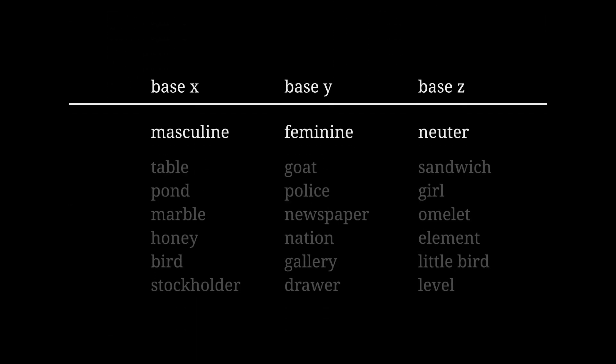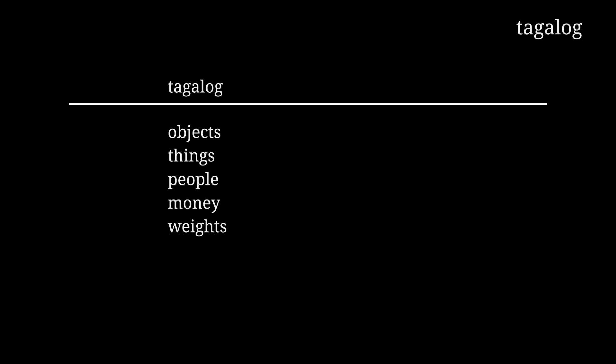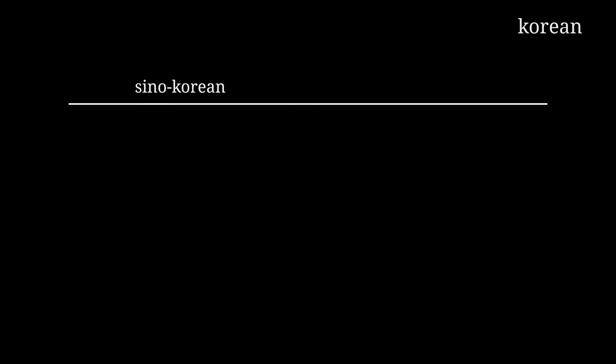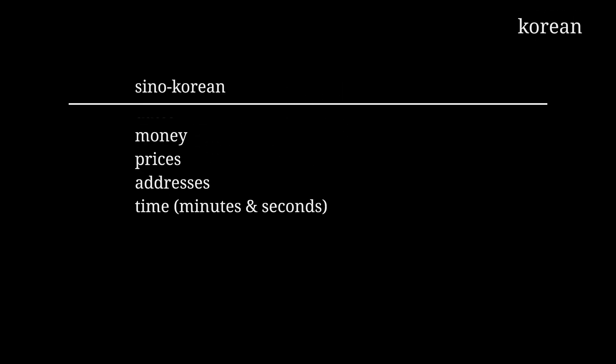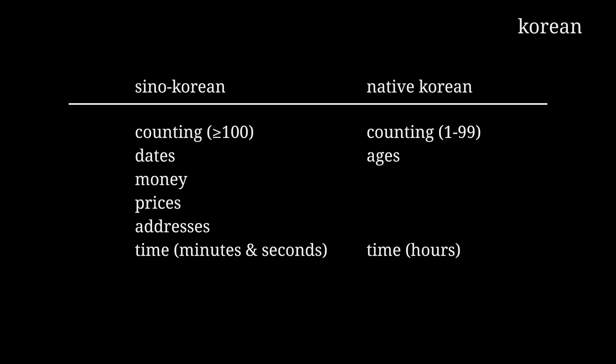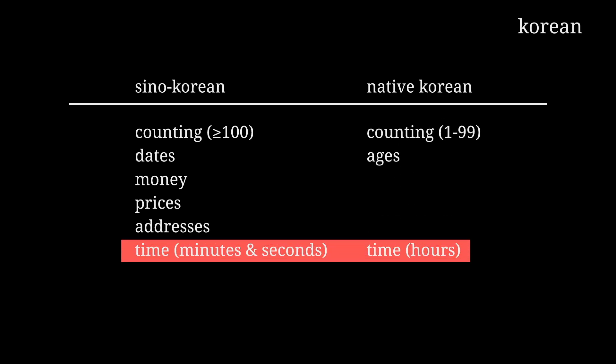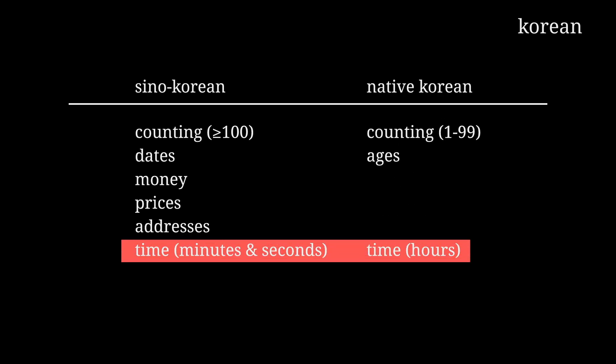Similarly, you could mix your conlang's number systems. In Tagalog, a Philippine language, two different sets of numbers are used: native Tagalog is used to count some things, and Spanish is used to count others. Same for Korean — Sino-Korean numbers are used for some things, and native Korean numbers are used for others. And yes, time-telling really does work like that.